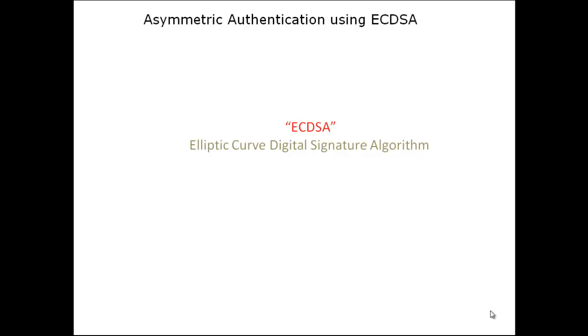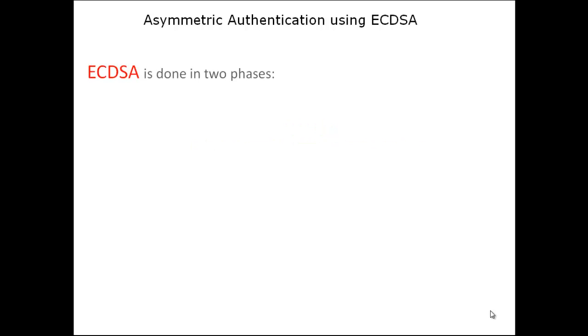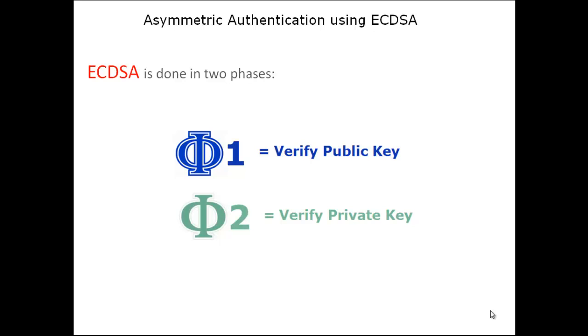Asymmetric authentication using ECDSA. ECDSA stands for Elliptic Curve Digital Signature Algorithm. ECDSA is a two-phased process. Phase 1 is to verify the client's public key, and Phase 2 is to verify the client's private key. If both phases pass, then the client is considered real.